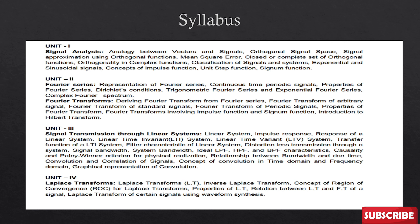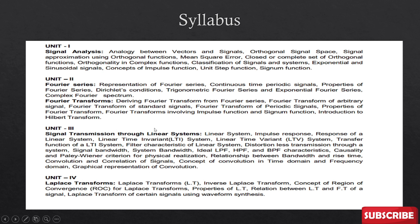From Unit 2 you can learn about Fourier series and Fourier transforms. If the unit is divided into two parts, then one question from each part is compulsory in the exam — know this trick and prepare accordingly. In Unit 3 you have signal transmission through linear systems. Unit 3 covers linear time variant and linear time invariant systems, as well as low pass, high pass, and band pass filters.